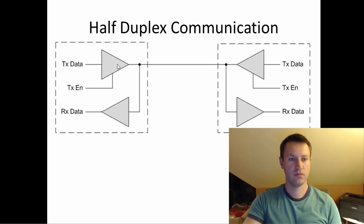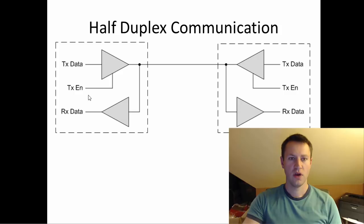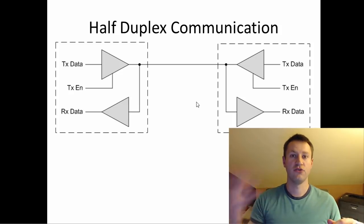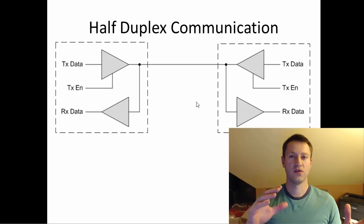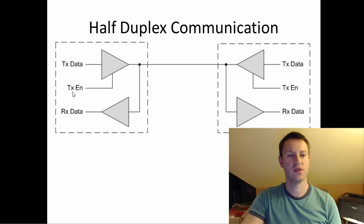In half duplex, you have two transmitters that can talk to each other, and the receivers are always listening. Everything the left transmitter sends, the left receiver also hears — so you're basically hearing yourself talk, but you also hear when the other side talks. This requires knowing when to talk. Typically it's a call-and-response pattern with a master and slave: the slave listens by default and doesn't transmit unless spoken to first — as with I2C.